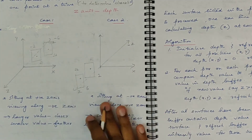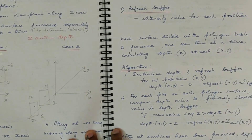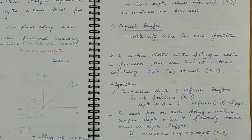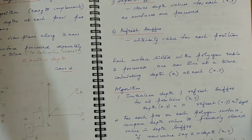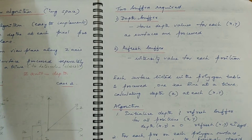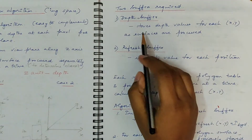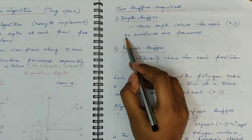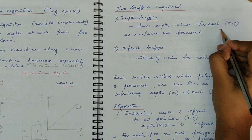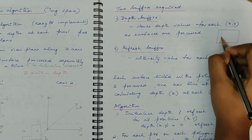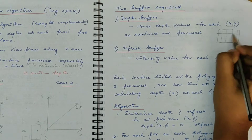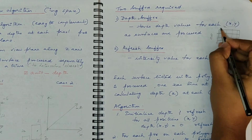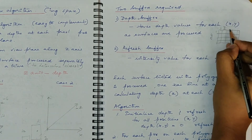In order to work out this algorithm, you need two memory buffers. You call one of them the depth buffer and the other the refresh buffer. The depth buffer stores a depth value for each XY pixel position as the surfaces are processed. It will be a buffer where you have the X and Y values — at pixel position (1,2), for example, if the Z value is 3, then the depth value 3 will be stored at that position in the depth buffer.